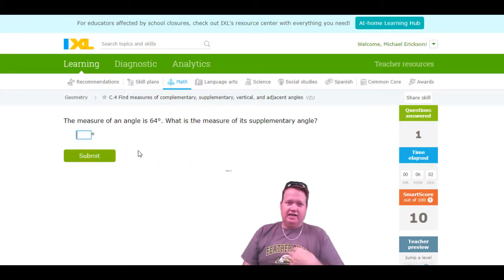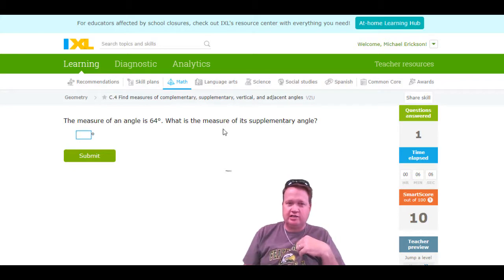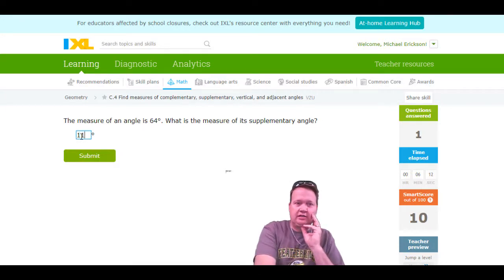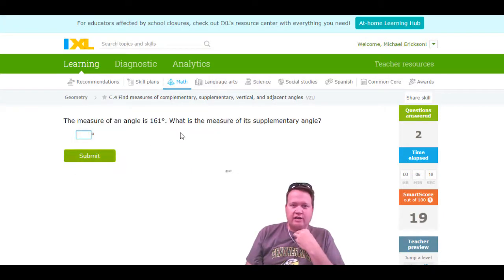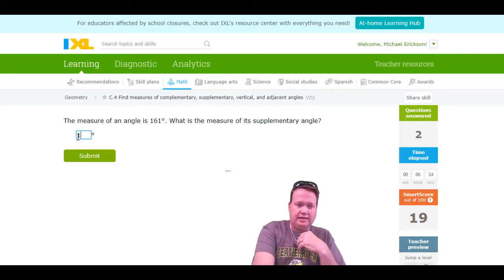If the measure of an angle is 64 degrees, what's the measure of its supplementary angle? We got to go 180 minus 64, which is 116 degrees. The measure of an angle is 161, so its supplement will make it go up to 180. It's going to be 19 degrees.